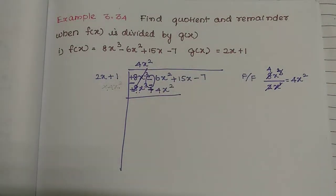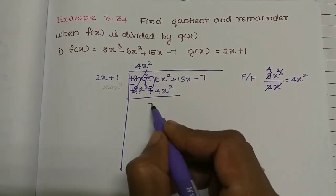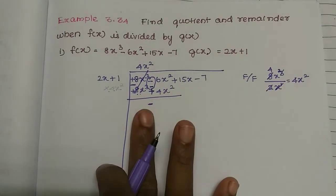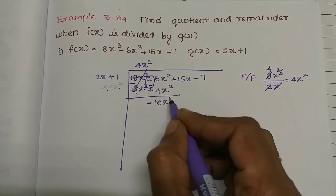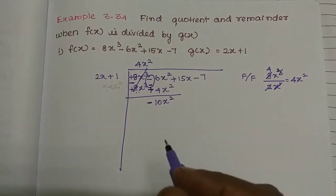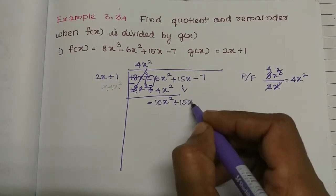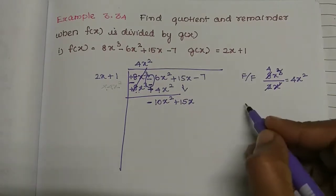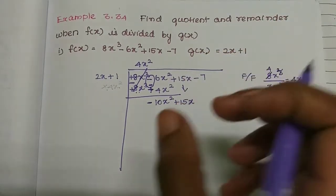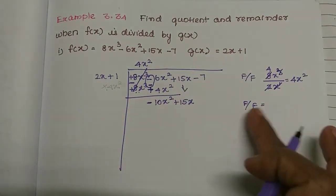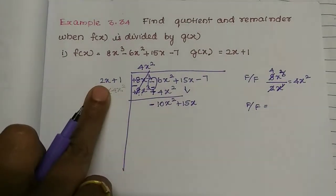After grouping, we bring down the next term, which is plus 15x squared. Now, first term divided by first term — we need the next step.